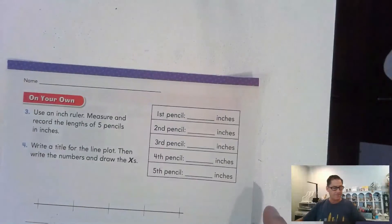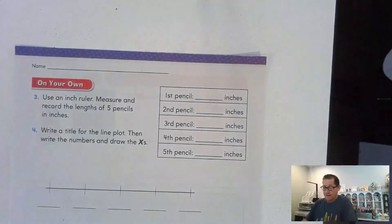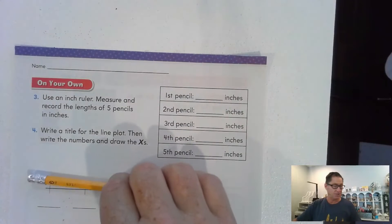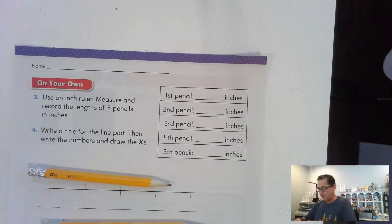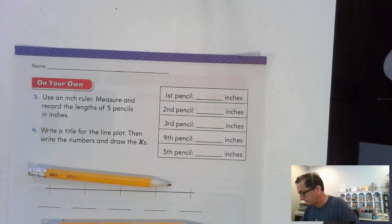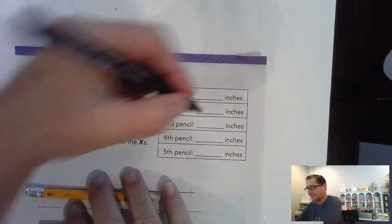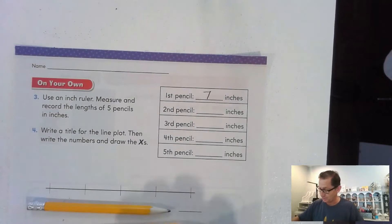On page 435, find five pencils and measure them to the nearest inch. My first pencil is less than seven and a half, so I'm going to say seven inches.